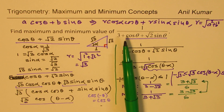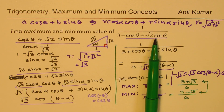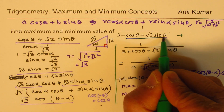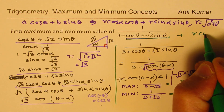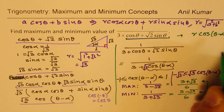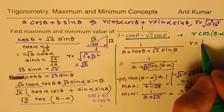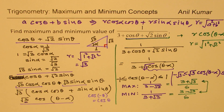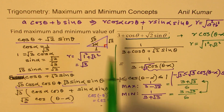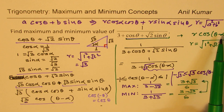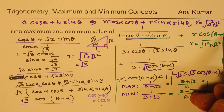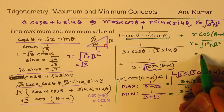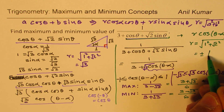To summarize: we wrote cos θ + √2 sin θ as r · cos(θ − α), where r = √(1² + (√2)²) = √3. Since we only needed maximum and minimum, not the actual angle α, we didn't compute α explicitly. The extreme values of √3 cos(θ − α) are ±√3.